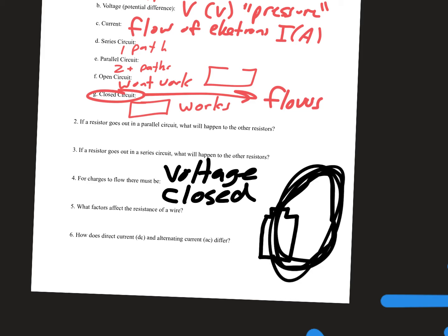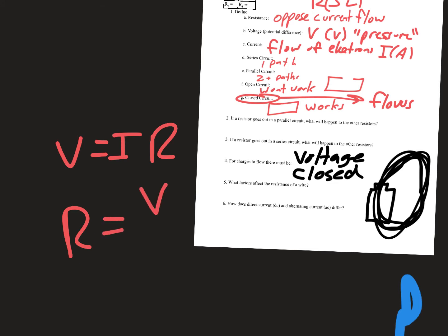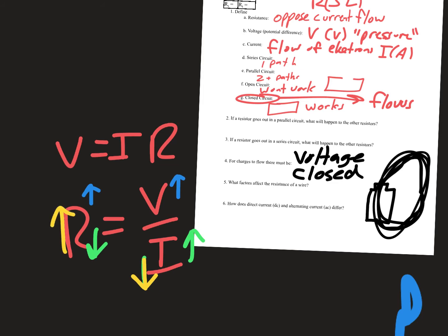What factors affect the resistance of a wire? By Ohm's law, voltage equals current times resistance (V = IR). Resistance is directly related to voltage and inversely related to current — increasing voltage can increase resistance; increasing current should decrease voltage, and decreasing current should increase resistance.